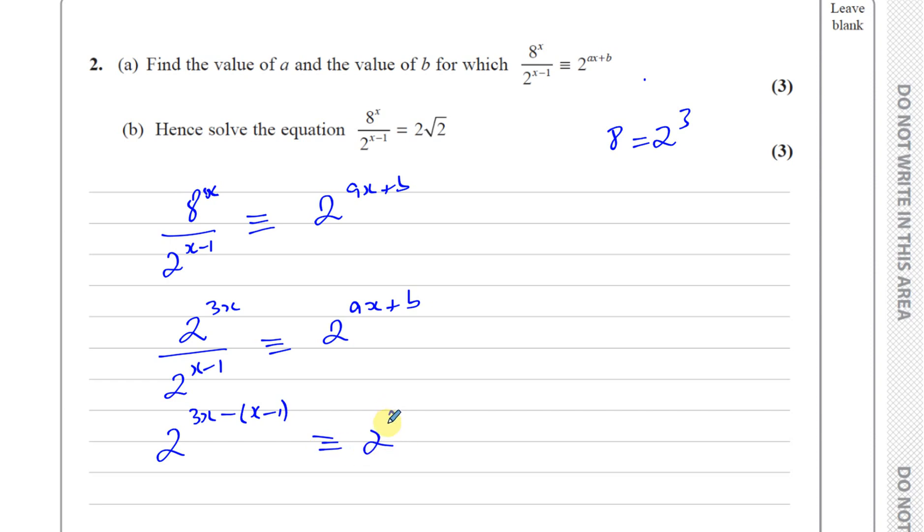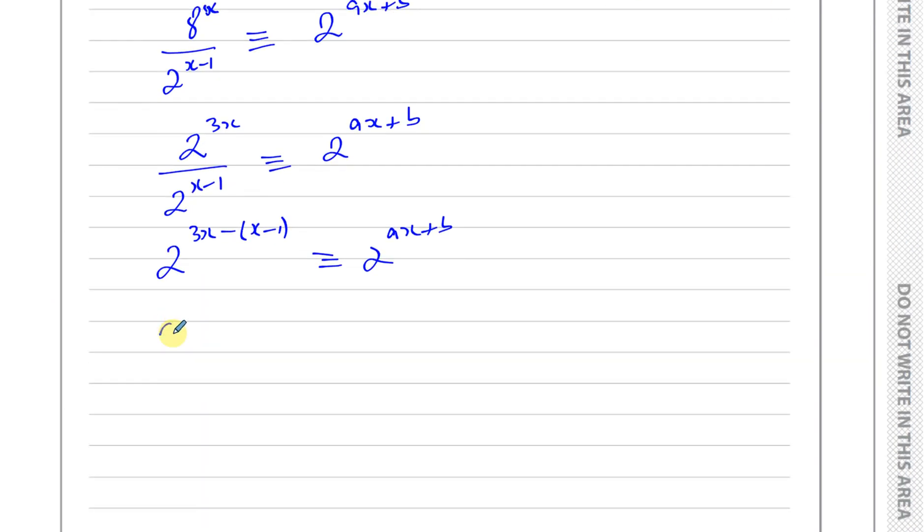If we simplify this, 3X minus X is 2X, and minus (X minus 1): minus 1 times minus 1 gives you plus 1. So 2 to the power of 2X plus 1 equals 2 to the power of aX plus b.